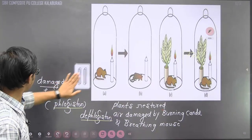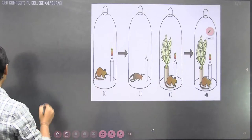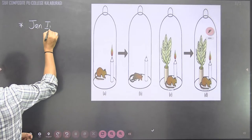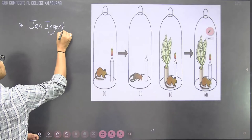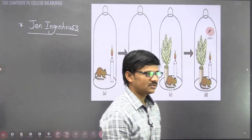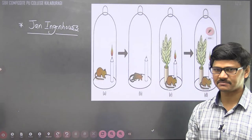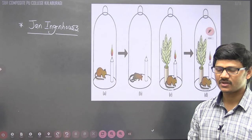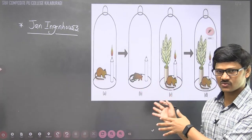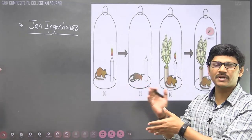The next scientist is John Ingenhousz. He repeated the same experiment as Priestley using the same setup — bell jar, mouse, and candle. But he made a small change: he placed this experimental setup once in a dark room and another time in the presence of sunlight.